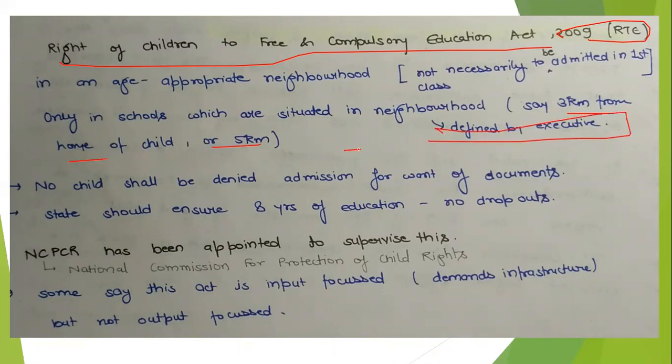The second provision in this Act was that no child can be denied admission to any school just for want of documents. If documents are not available, admission must still be granted.